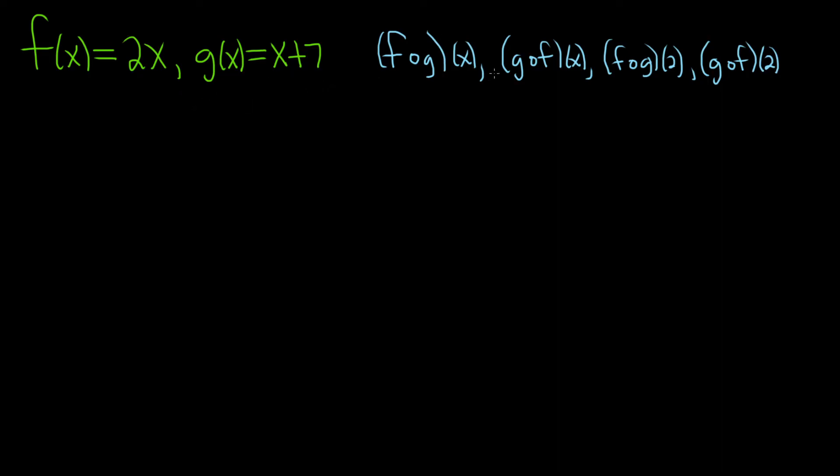The first part wants us to find f∘g of x. Let's go ahead and work through that. So when you have f∘g of x, this is the same thing as saying f of g of x. So you want to work from the inside out. First you replace the g. So g of x here is x plus 7.